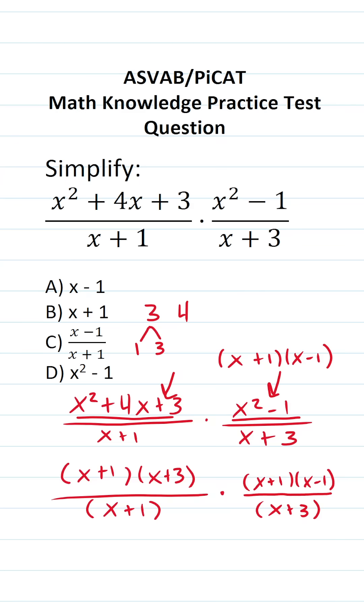What are we really doing here? We're multiplying fractions that happen to have expressions in them. When you multiply fractions, you multiply straight across, but you can always cross reduce. I can cancel the x + 3 terms and the x + 1 terms. What does this leave me with? It leaves me with (x + 1) times (x - 1).